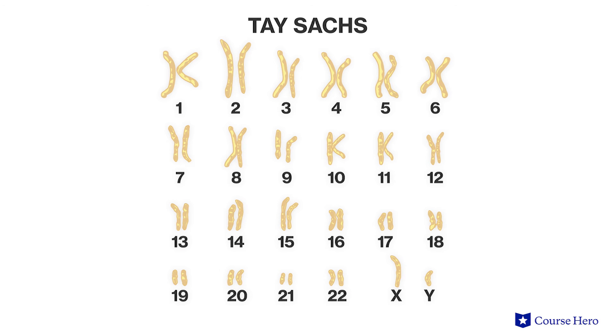Now that we know about the different types of mutations that can occur, it's worth considering what the significance is of mutations in our world. Often mutations lead to problems that harm the organism or even result in its death. For example, Tay-Sachs is a rare but fatal disorder caused by a mutation in a single gene.